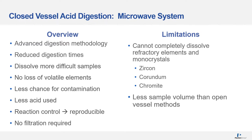Closed vessel digestion, or microwave digestion, is an advanced method used to digest more difficult sample types. It is considered faster, cleaner, and more reproducible than open vessel digestion. The main advantage is minimising work time and evaporation of volatile elements, with less acid used and less contamination from the working environment. However, it still has limitations in completely dissolving some refractory elements and monocrystals such as zircon or chromite.